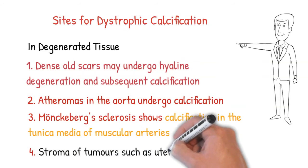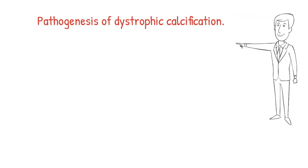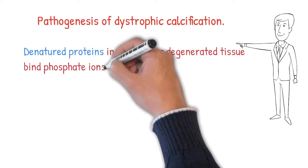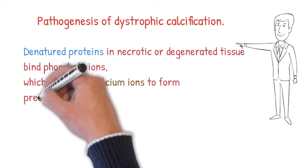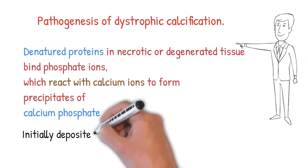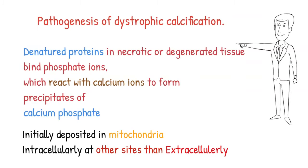What is the exact pathogenesis of dystrophic calcification? Why does calcium deposit into dead and degenerative tissue? In dead and degenerative tissue there is denatured protein, which has a high amount of phosphate. This phosphate combines with calcium to form calcium phosphate, producing dystrophic calcification. Deposition mostly starts in the mitochondria, then proceeds intracellularly to other sites and also extracellularly.